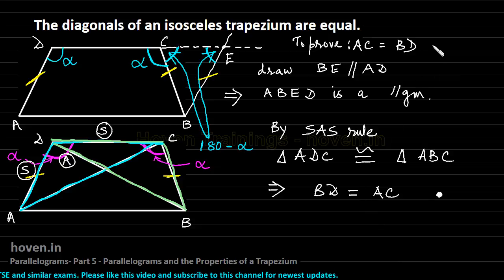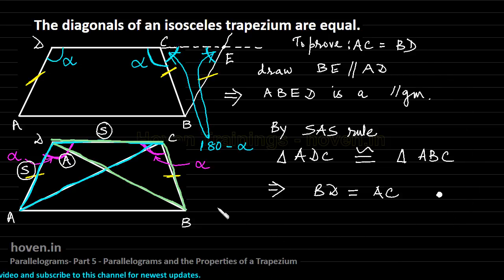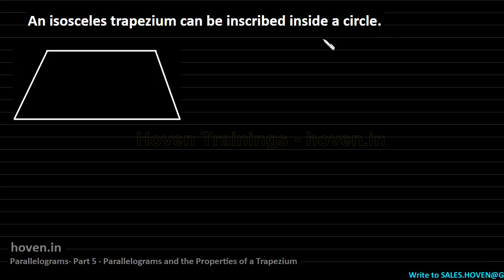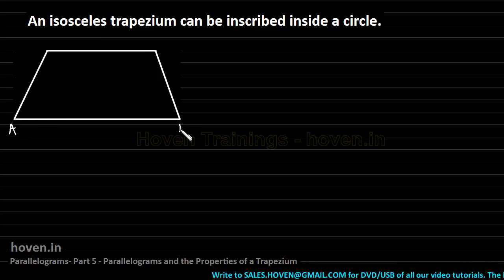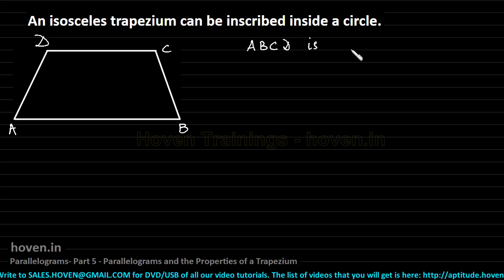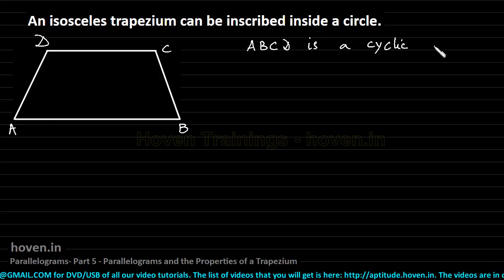So you can remember these results, but if you want to see the proof, the proof is given here. Let us move on. An isosceles trapezium can be inscribed inside a circle — that is, an isosceles trapezium is a cyclic quadrilateral. Let us mark the four vertices A, B, C, D and prove that ABCD is a cyclic quadrilateral.